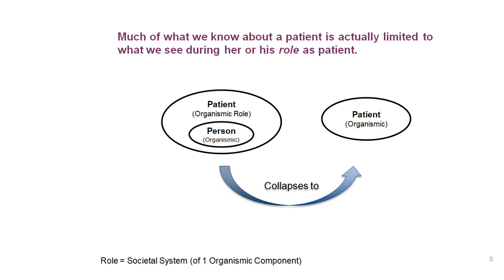Here's one example in healthcare. Much of what we know about a patient is limited to their role as a patient — so 'patient' is really a role. The organismic system we're typically dealing with in healthcare is a person. A person is an organismic system; a patient is a person in a given role within the healthcare setting. I refer to that as an organismic role — a role that is essentially a societal system that only one person would fill.